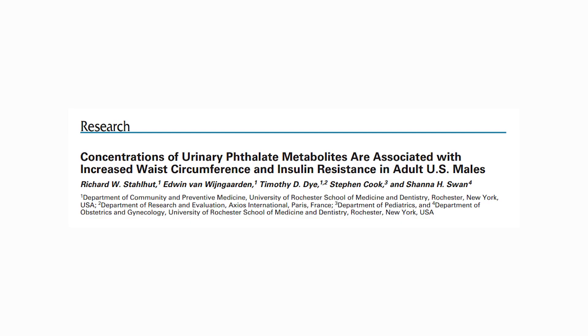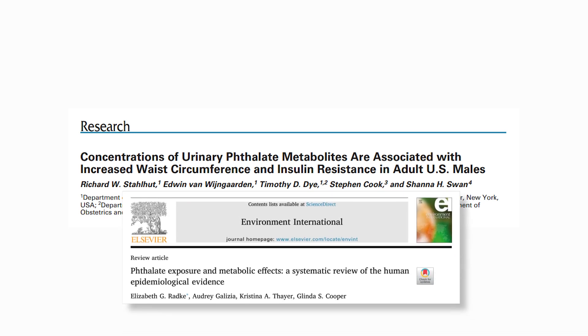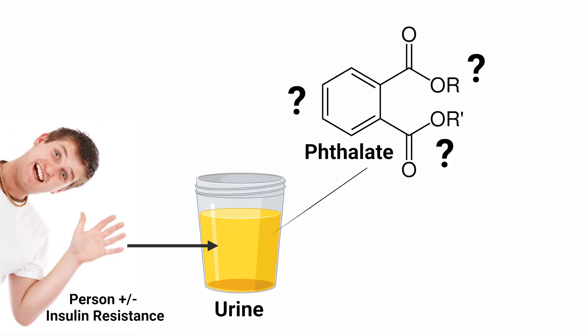Another question you might have is, are they really a problem? I don't want you to take my word for it, so in this video I'm going to show you some data from a study as well as offer you a systematic review — a comprehensive study of many studies — on the topic of phthalates and diabetes risk. This initial study is an epidemiological study, meaning the researchers analyzed data taken from thousands of people across time and wanted to see if there was an association between certain health markers, in our case diabetes markers like blood sugar and insulin, and the amount of various phthalates in the urine.